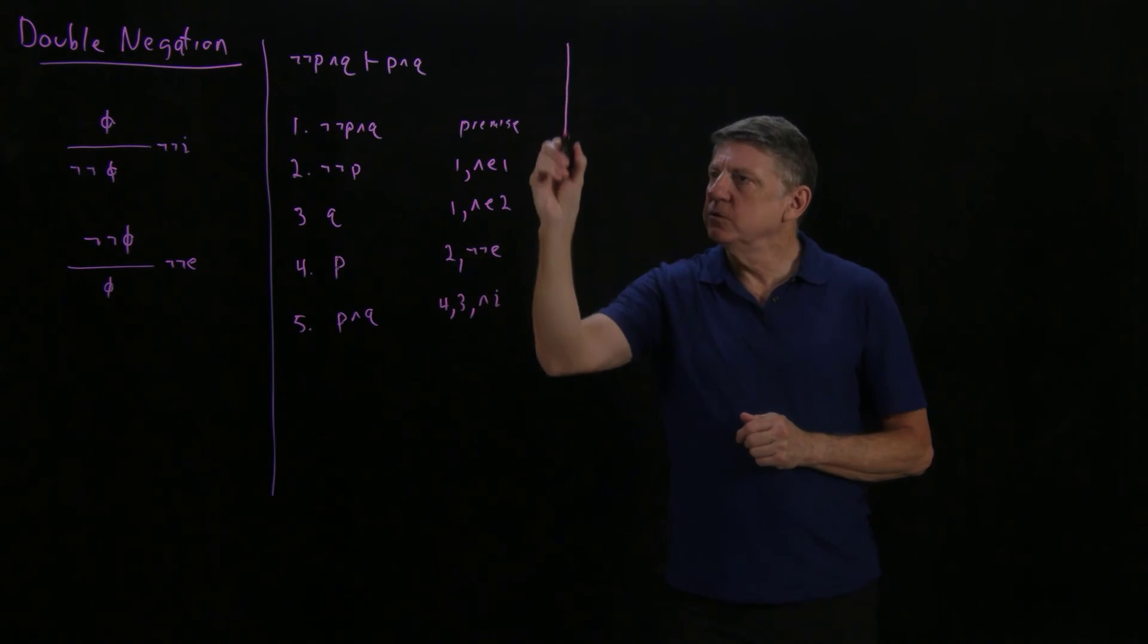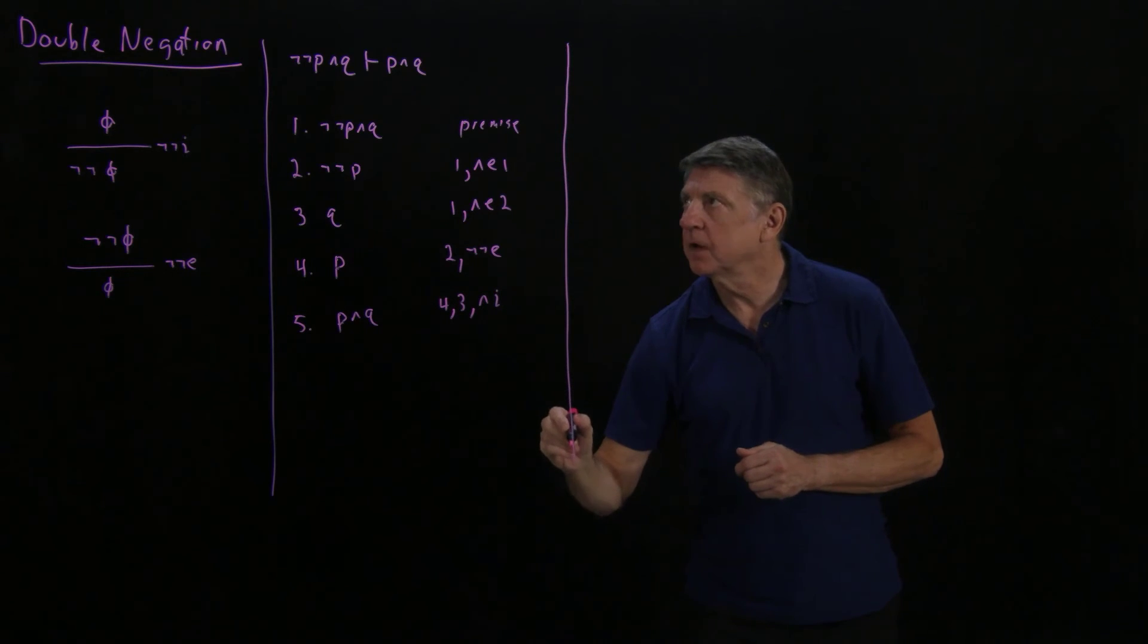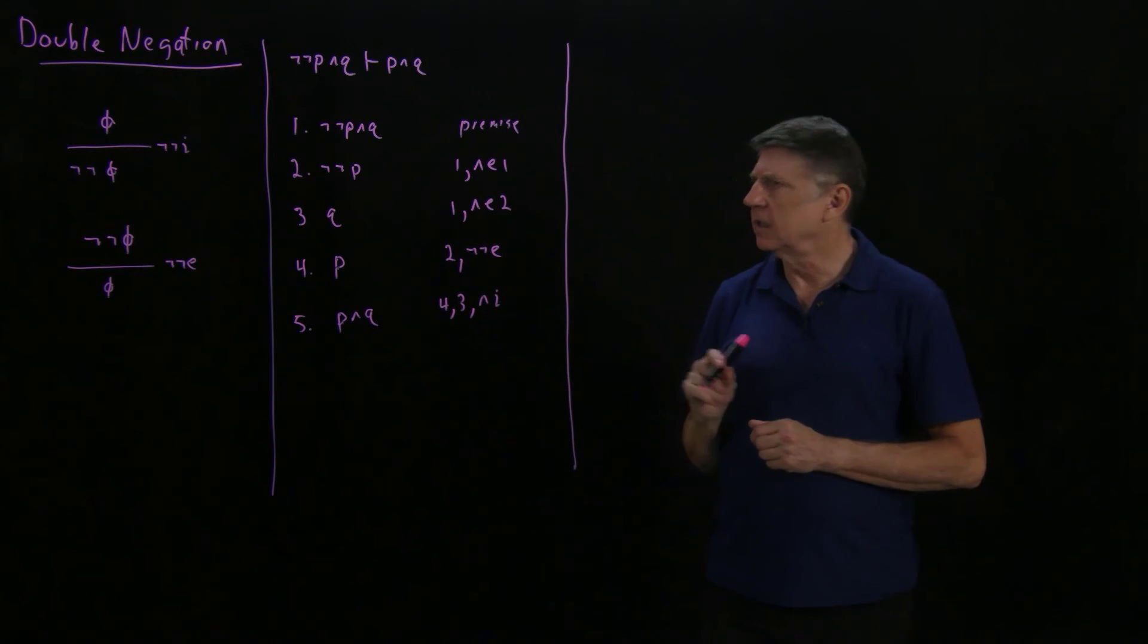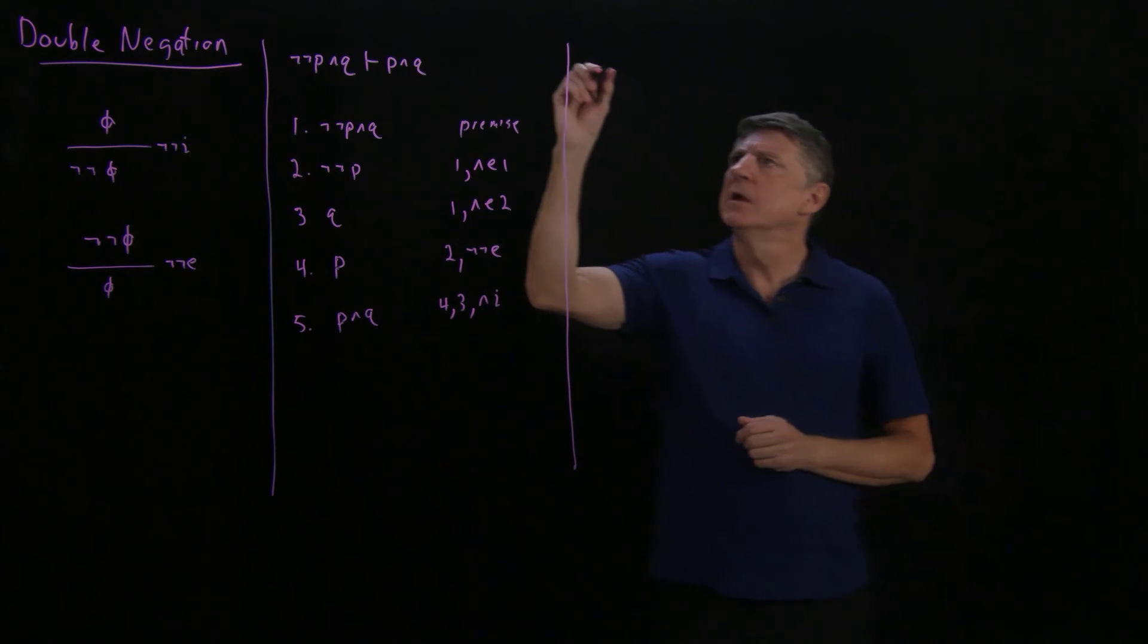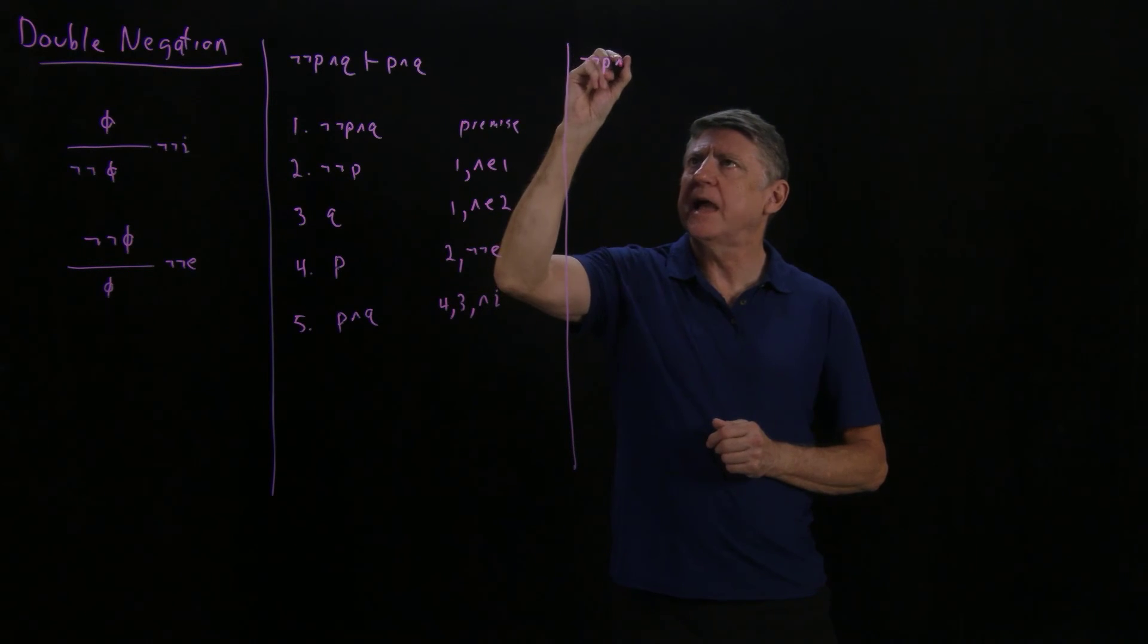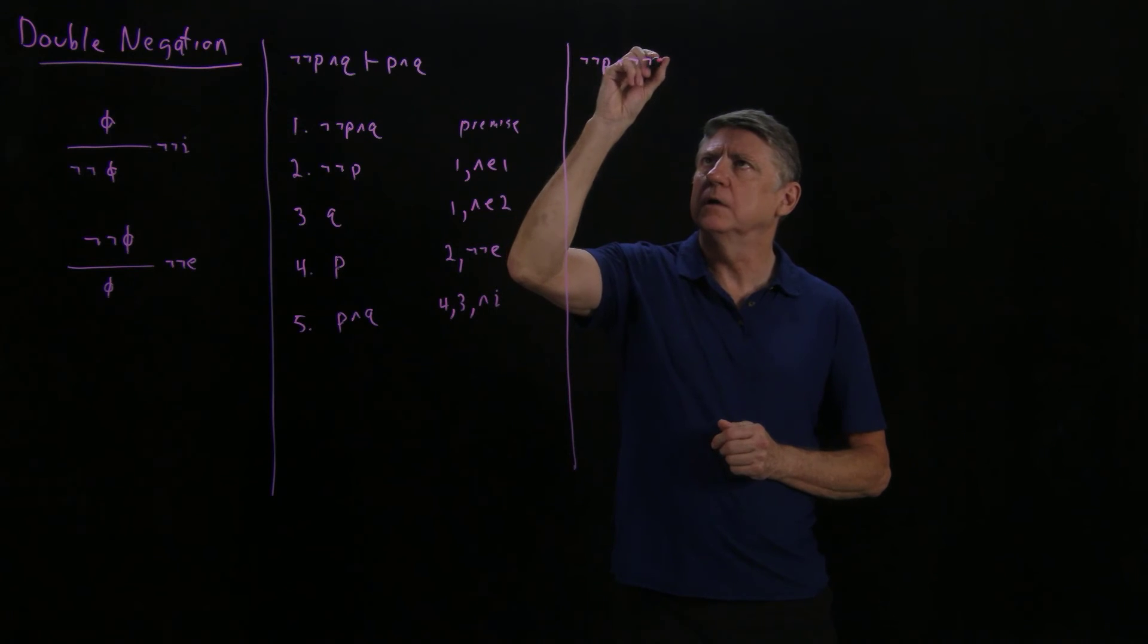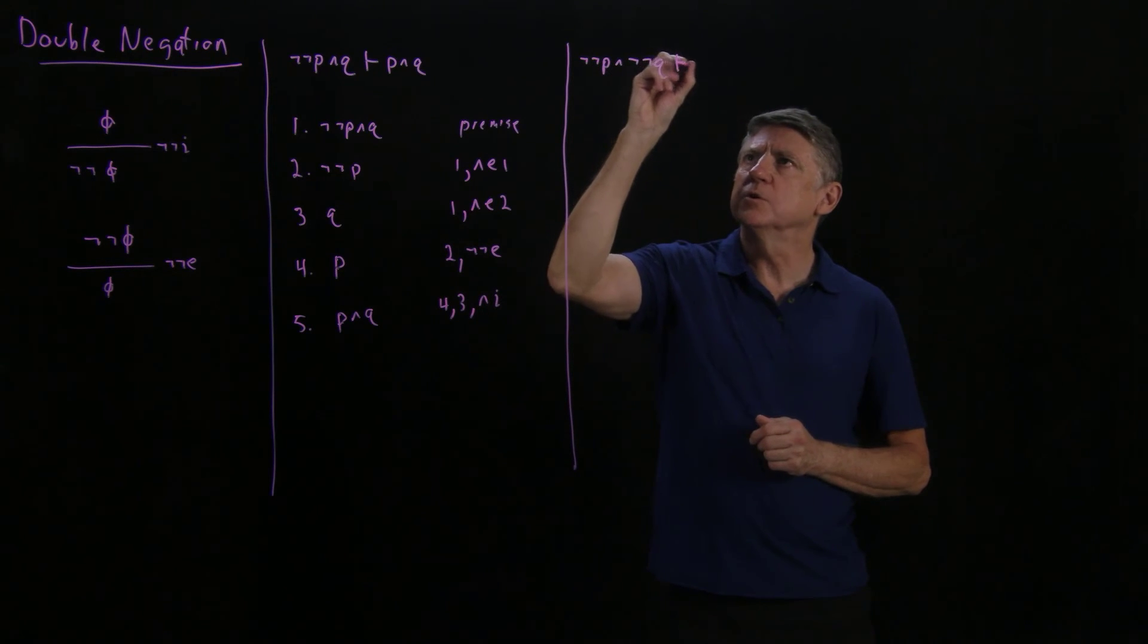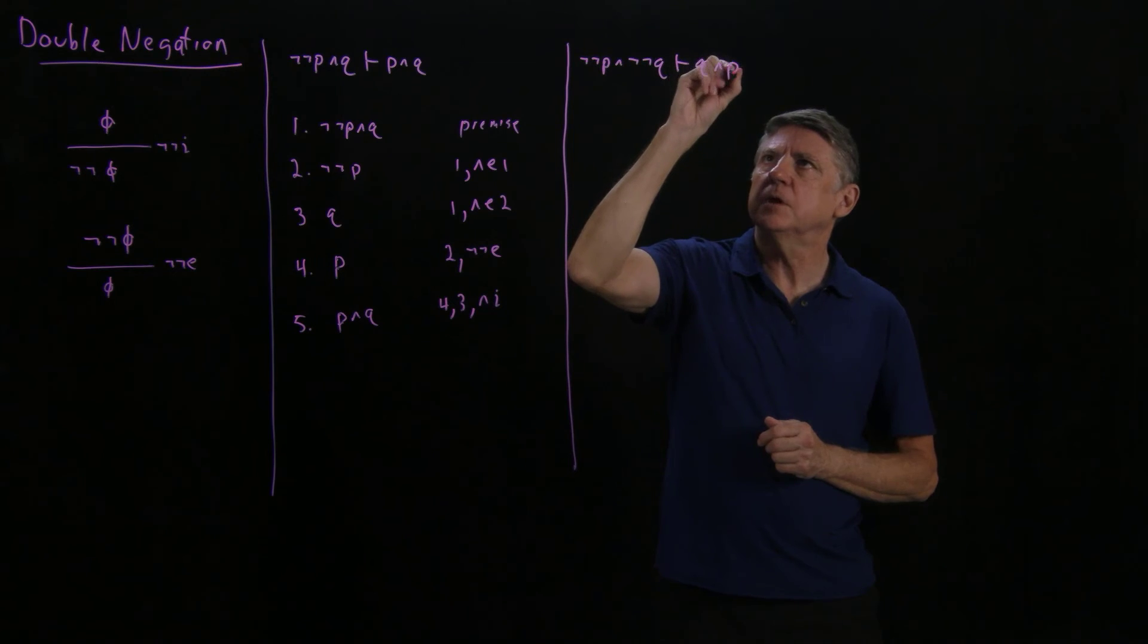We use forward reasoning there. Let's try a slightly more complicated one. Suppose that we have not not p and not not q, and what we want to assert is q and p.